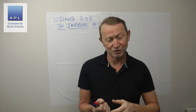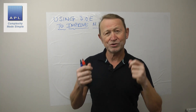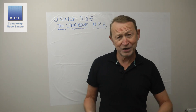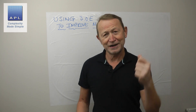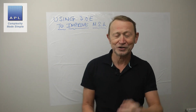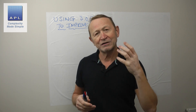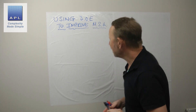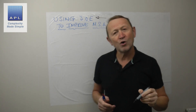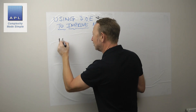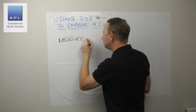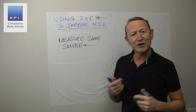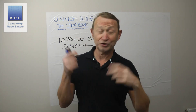Somebody presented this to me last week in a project. They'd done an MSA in a laboratory. Often in laboratories you're trying to control well-educated people — lab technicians, people with degrees, engineers — who don't necessarily want to follow rules. They think it's okay to just get on and do the test. So we need some evidence that certain controls are needed. When you do a DOE on an MSA, essentially you're going to measure the same sample, the same item.